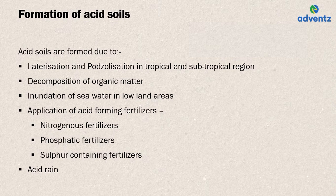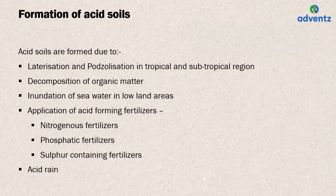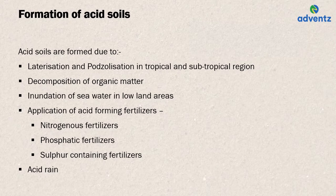The second way is decomposition of organic matter — organic acids produced during decomposition reduce soil pH. The third method is inundation of seawater in low-land areas. Land inundated with seawater is rich in sulfates. Under submergence, sulfates get reduced to sulfides due to microbial action. When the soil is drained, the sulfide is oxidized to sulfate or sulfuric acid, which increases acidity, leading to development of acid sulfate soils with pH lower than 4.0.